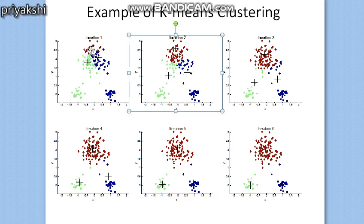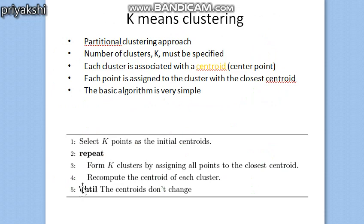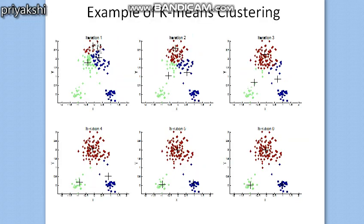After assigning all points to their closest centroid — completing the first step of the algorithm — we then recompute the centroid value. You compute the new centroid by taking the mean of all data points in each cluster. You can see the centroid has shifted from its original position to a new position after this recomputation.